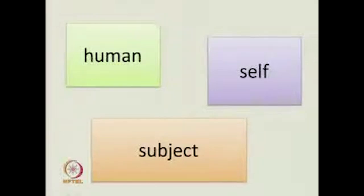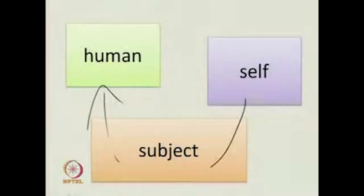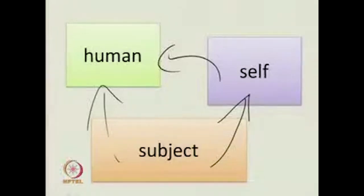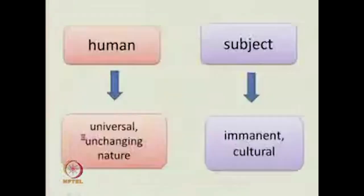There are three terms I want you to look at. When we say 'subject,' there are kindred terms. Some people say a subject is a self; some people say a subject is a human being, or human nature. So these are terms that are related: human, self, and subject. It is important for us to look at the differences among these terms.